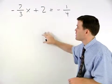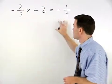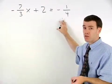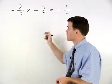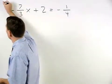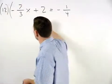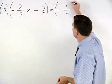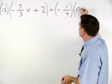The common denominator for 3 and 4 is 12. So we start things off by multiplying both sides of the equation by 12 to get rid of the fractions.